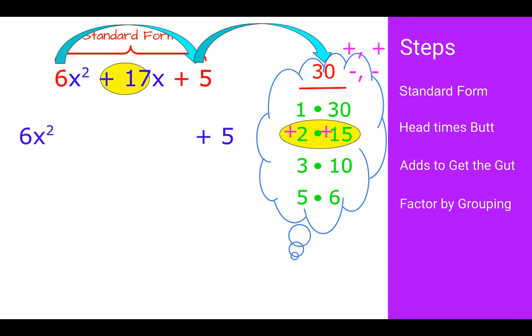If I start factor by grouping and breaking the middle term up, I can break 17x into 2x plus 15x, or vice versa, 15x plus 2x. Grouping them, I have 6x squared plus 2x. If I take out a 2x, they both share a 2x, I'm left with 3x plus 1. If you take out a 2x from a 2x, you still have 1. You don't have 0. 2x times 3x is 6x squared, 2x times 1 is 2x.